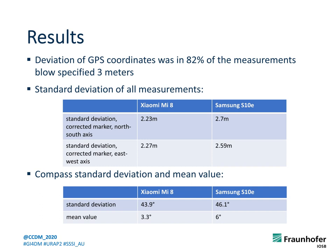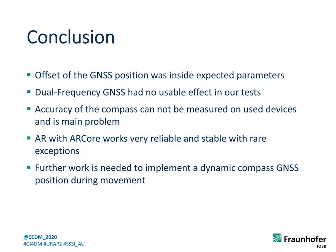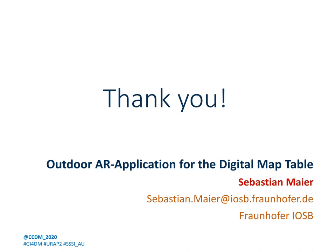I have to remind you that these values are all measured with an already calibrated compass. In conclusion, the GNSS position was inside the expected parameters. The dual-channel GPS had no usable effect in our tests for our application. The accuracy of the compass could not be measured reliably on the smartphones and is the main problem, which is even bigger for markers at a distance. We really did not expect this, and it makes markers in the distance very unreliable. Augmented reality with ARCore worked very well with some rare exceptions. To compensate the bad compass, we would like to implement a dynamic compass based on the GNSS position to determine direction, which would require the user to move to get different GNSS locations. Thank you for your attention — if you have any questions, feel free to write me an email. Thank you and goodbye.